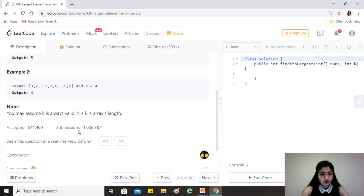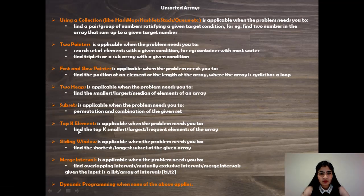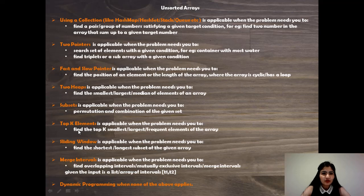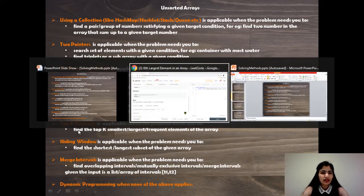Let's take a look at the various approaches we can use to solve any unsorted array question. I request you to pause, take a look, think, and come back. The clear winner here is the top-k elements approach, because it is specific for questions around finding the top k smallest, largest, or most frequent elements of the array.